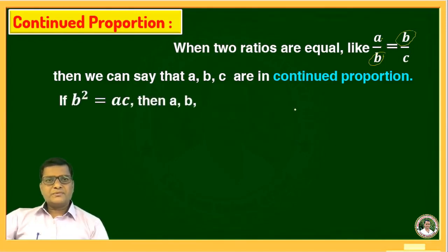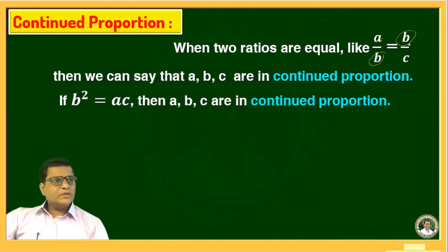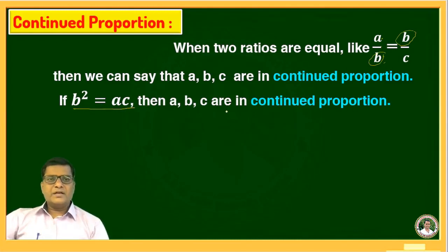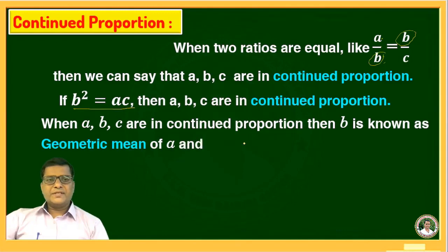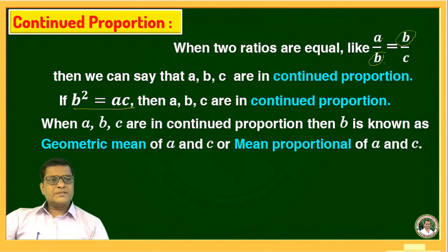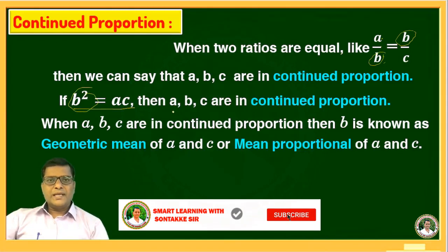That is, if B squared is equal to A times C, then A, B, C are in continued proportion. If we do the cross multiplication, B into B gives B squared equal to A times C. When A, B, C are in continued proportion, then B is known as the geometric mean of A and C, or the mean proportional of A and C.